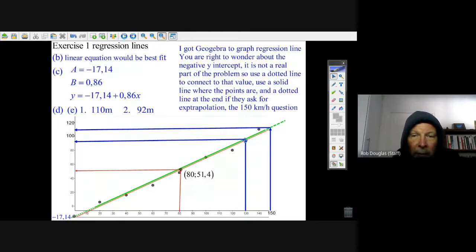The estimate of 130 - you just go up to 130, hit the line and run over, and I got pretty close to 92 meters. For 150, that's an extrapolation beyond the 140 - 140 is the biggest one.